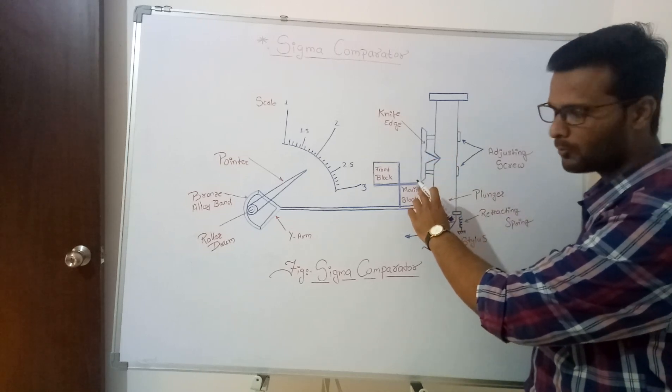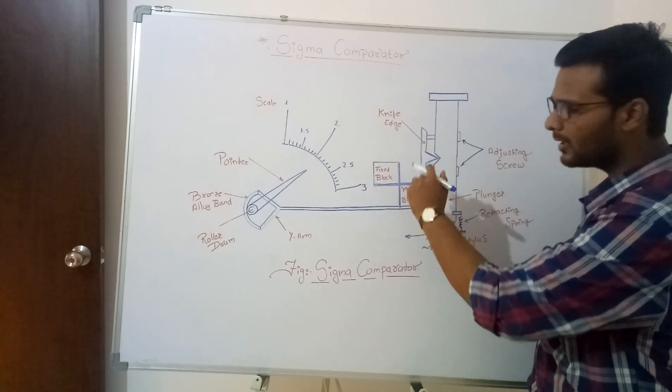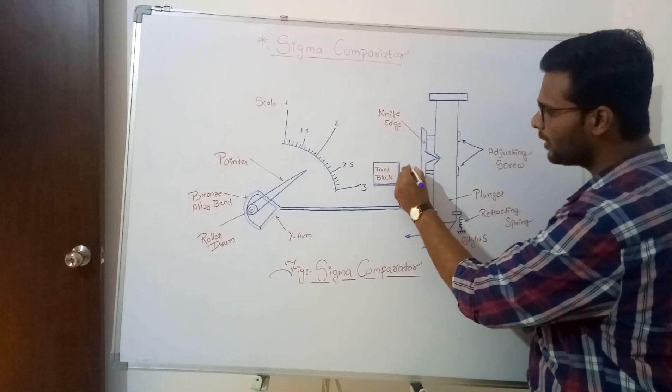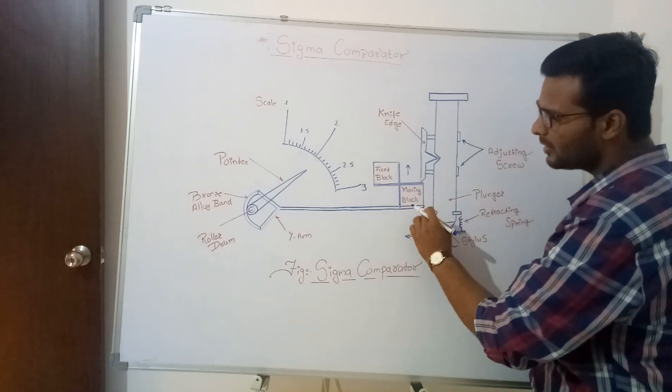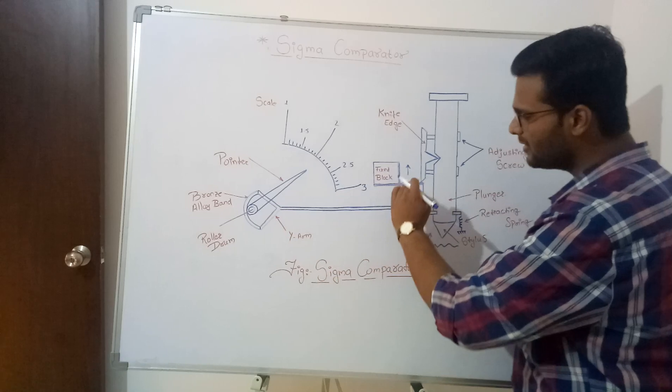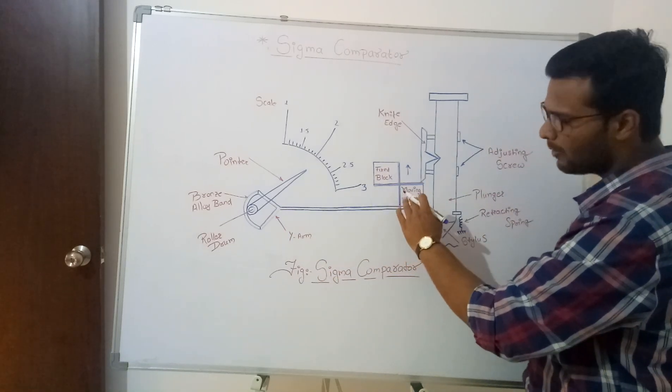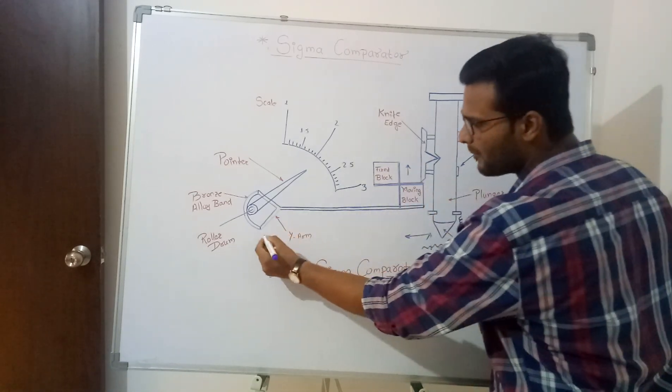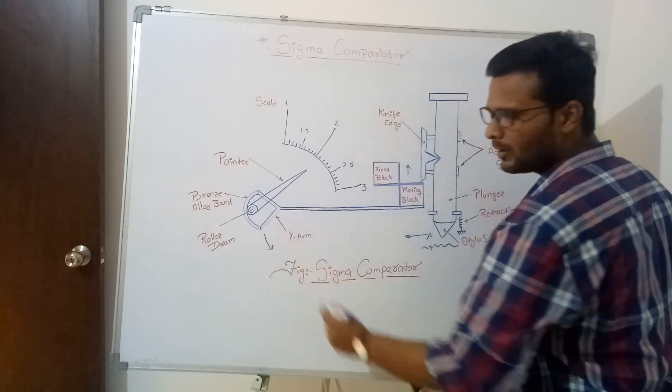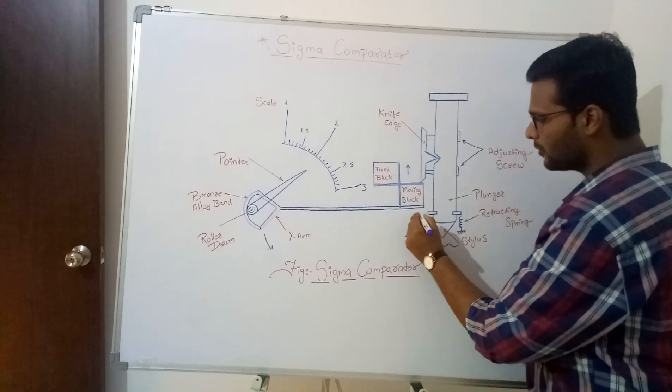The moving block is also going to move in upward direction due to which this Y arm is connected or is resting on that moving block due to which what happens this Y arm moves downward and this moves upward. Because it's moving upward, it moves upward and this Y arm moves in downward direction.